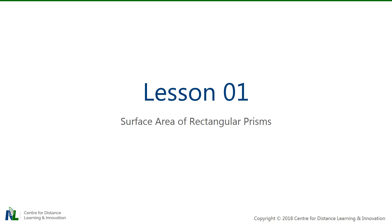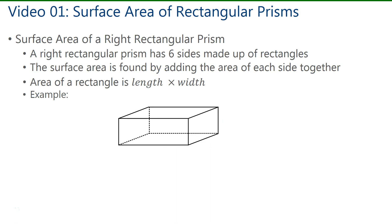Welcome to Lesson 1 on Surface Area of Rectangular Prisms. To determine the surface area of a right rectangular prism, we first take note that a rectangular prism has six sides, each made up of rectangles. To find the surface area of a rectangular prism, or any object for that matter, we add up the area of each side. And the area of a rectangle is given by length times width.